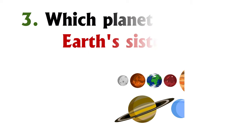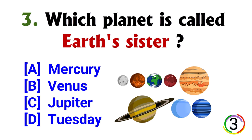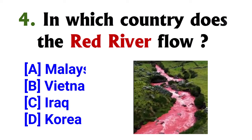Which planet is called Earth's sister? Option B, Venus. In which country does the Red River flow? Option B, Vietnam.